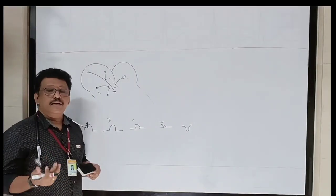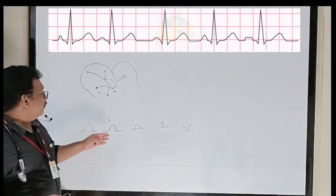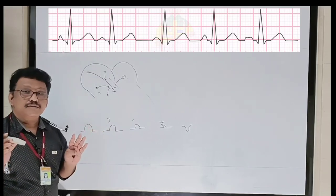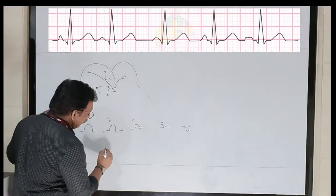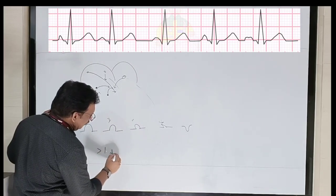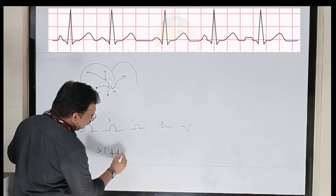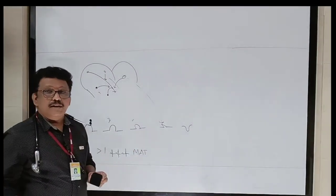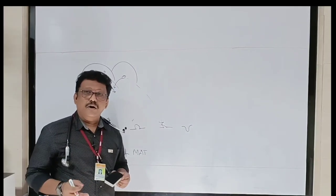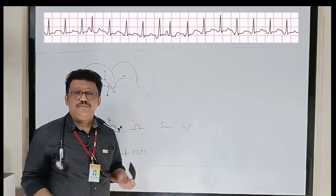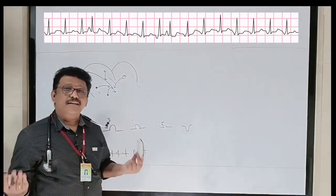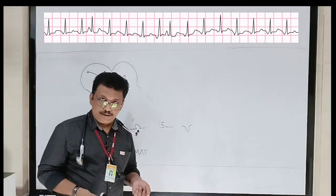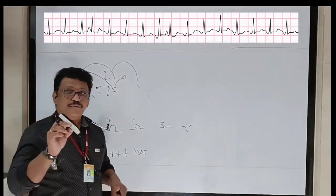If more than three abnormally morphed P waves are seen in a rhythm strip you can call it multifocal rhythm or wandering pacemaker — the pacemaker is wandering. P wave morphology is abnormal but PR interval and QRS complex still occur. That is wandering pacemaker. But if it is very fast — more than 100 beats per minute — with irregular P wave morphology and QRS complex, you call it multifocal atrial tachycardia (MAT).